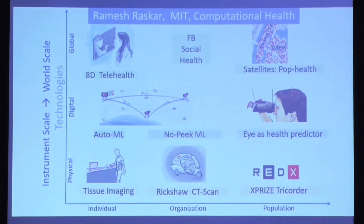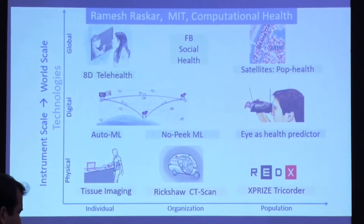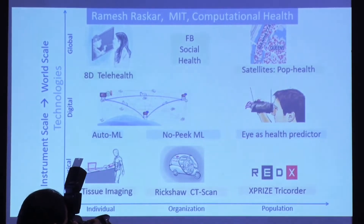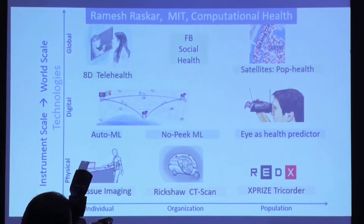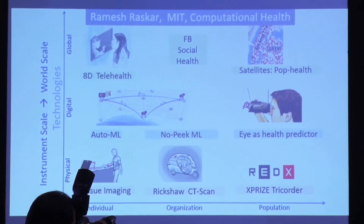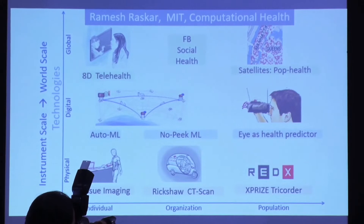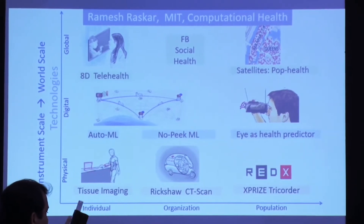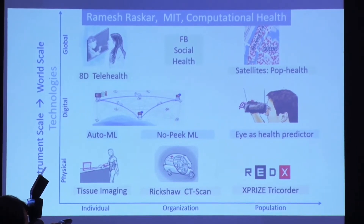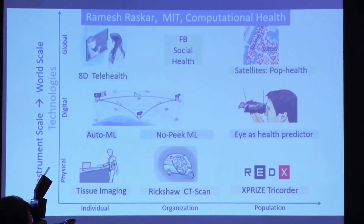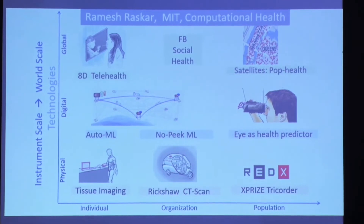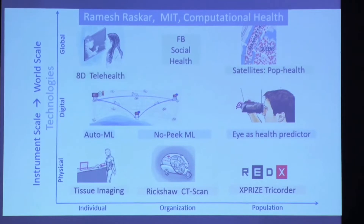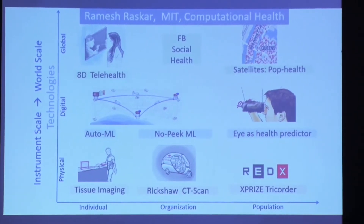My group at MIT works on many areas including computational health. We want to think about an individual scale, organizational scale, or population scale, but we also want to think about other dimensions — not just physical technologies like diagnostics and devices, or digital technologies like data science and machine learning, but also global technologies such as satellites, Google Street View, micro fluidics, and so on.